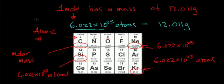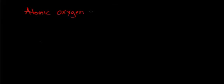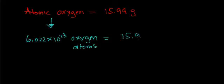Now let's go into a calculation. If we look at oxygen, atomic oxygen has a molar mass of 15.99 grams. What that means is 6.022 times 10 to the 23rd oxygen atoms has a mass of 15.99 grams. An individual oxygen atom is very, very small and doesn't have a lot of mass, so we need to mass out a large quantity of oxygen atoms before we can actually measure it on a laboratory scale.